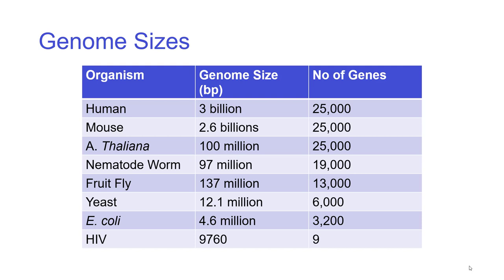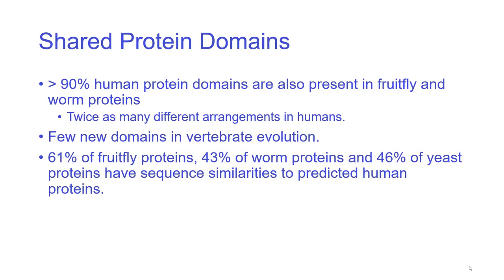Viruses have very small numbers of genes and very small genome sizes. This is because they are purely parasitic and lack most of the things requiring them to actually be functional. 90% of human protein domains are present in fruit fly and worm, which means there are lots of core functions present in all eukaryotes — including general metabolism and catabolism, which are also present in lower organisms including yeast.